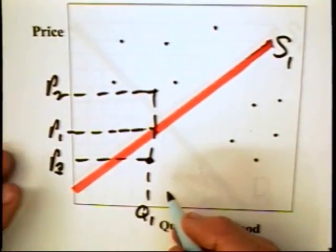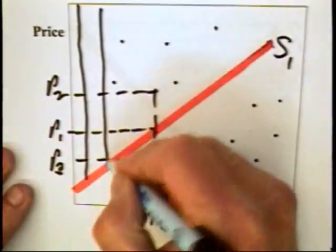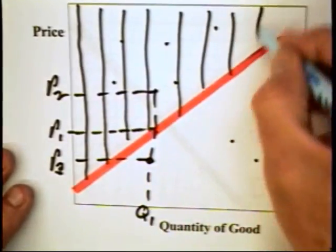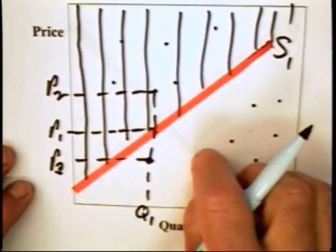So the moral of the story is that producers are willing to accept any combination in this striped area here. They're unwilling to accept anything down here.